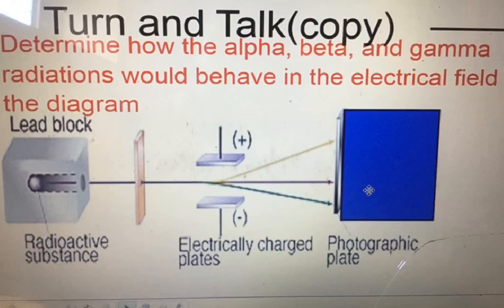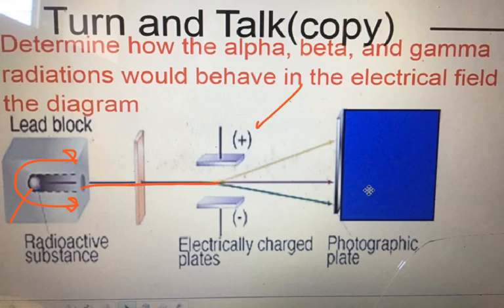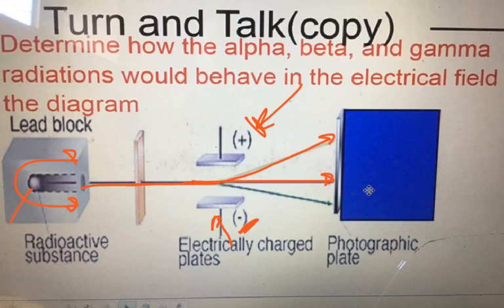I want you to use that information to figure out what particle is what — alpha, beta, gamma. You have this lead block here. Ask yourself: why is this radioactive substance in a lead block? It's being shot through this grating, and these two electrical plates are charged — one negative and the other positive. The particles are behaving differently: one goes straight through unaffected, another curves one way, and the third curves another. Pause the video and figure out which particle is which.